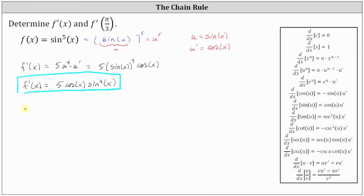And now we need to determine f prime of pi divided by three, or f prime of one third pi radians. f prime of pi divided by three is equal to five times cosine of pi divided by three times sine to the fourth of pi divided by three.